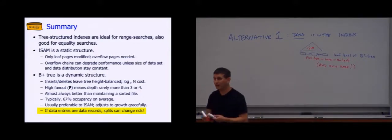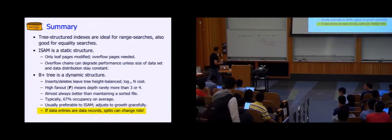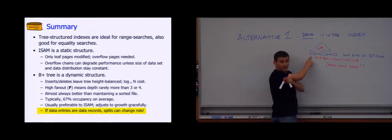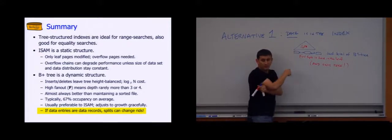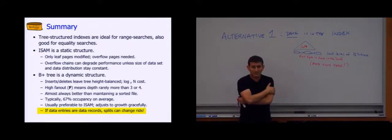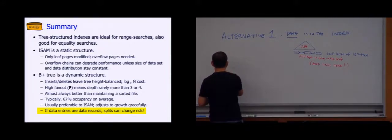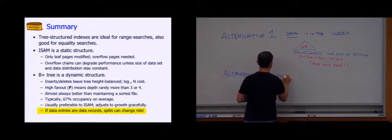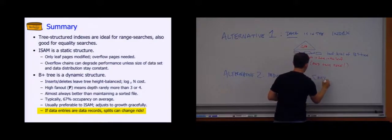If you have another index by, say, student ID, it would not be able to be alternative one. It would be alternative two, and it would have pointers into this B-tree — record IDs, which are page number comma slot number — that reference leaves of the B-tree. Alternative two: the index contains key comma RID pairs. In a B-tree, these would be in the leaf.